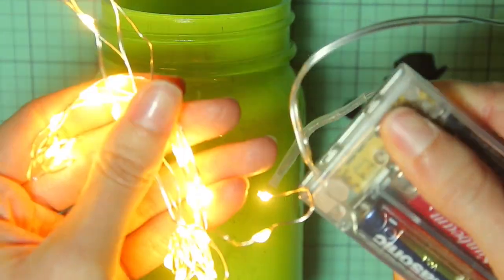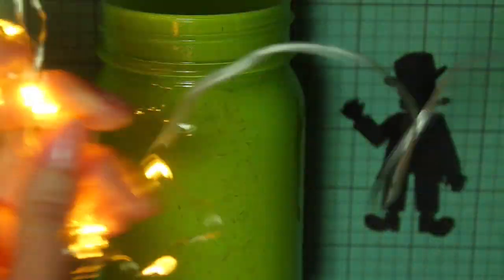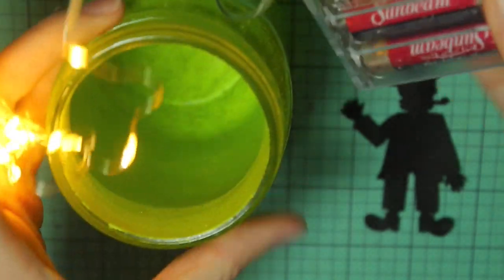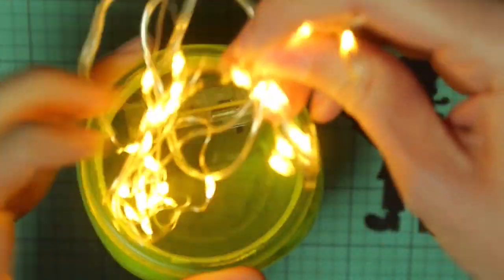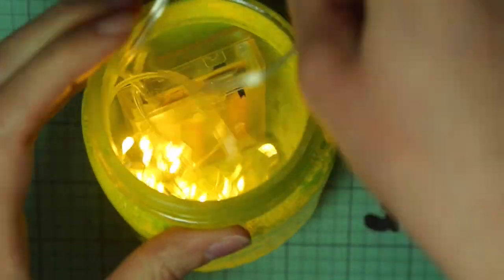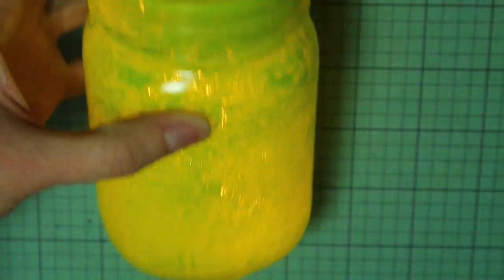You'll also need something to light up the jar with. I'm using this set of fairy lights and it's a pretty bright set so it helps create a silhouette better. So I'm just going to go ahead and put this inside and this isn't going to be the final position of it. I'm just using it to decide where to place the silhouette.